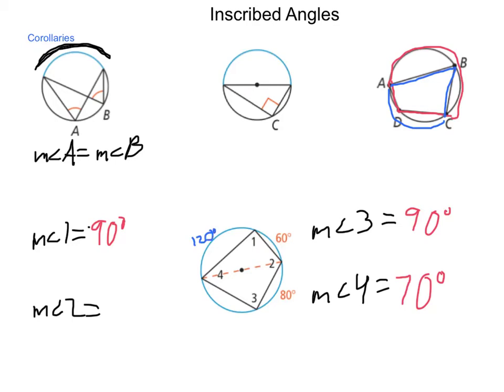And, using the same arguments, if this part of the arc is 80, then the remaining part between angles 3 and 4 on the arc would have to be 100 degrees.